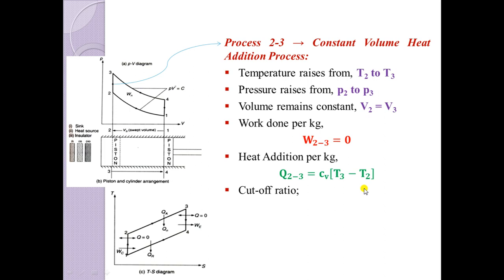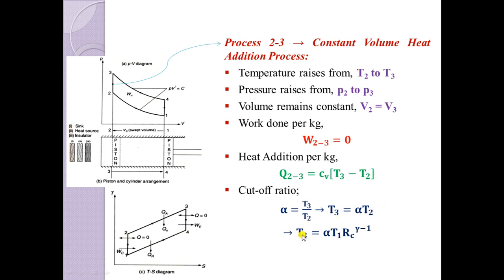An important ratio in the Otto cycle is the cutoff ratio, denoted alpha, which defines where heat addition stops. It is defined as alpha = T3 / T2, so T3 = alpha · T2. From the previous process, T2 = T1 · RC^(γ−1), so the final expression is T3 = alpha · T1 · RC^(γ−1).